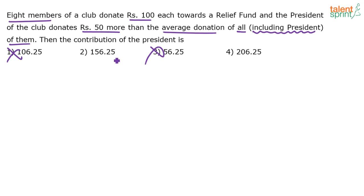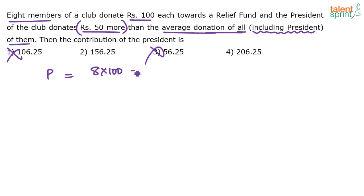Now that we have two options left — 156.25 and 206.25 — we have to do some calculation. Let us find out the donation of the president. Assume the president has donated P rupees. P should equal 50 more than the average donation of all of them. Eight members donated 100 each plus the president donated P, so total donation is 8 into 100 plus P, which is 800 plus P. Divided by 9 gives the average, since there are 9 members total including the president.